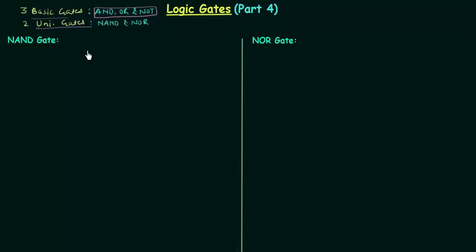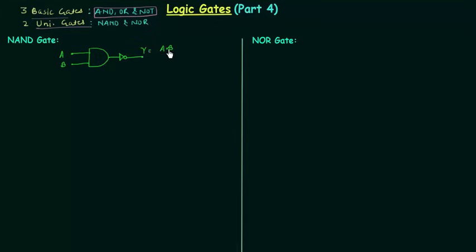We obtain NAND gate by complementing the output of AND gate. So first we have to make AND gate — I will make a 2-input AND gate. The 2 inputs are A and B. Now we have to complement the output, so I will use 1 inverter. The output Y is A AND B, whole complement. This whole unit including the AND gate and inverter will work as a NAND gate.